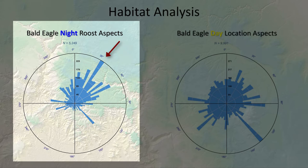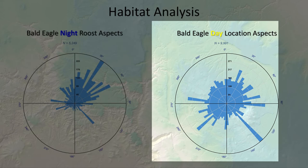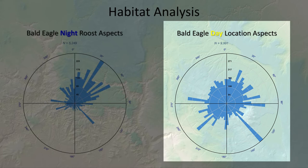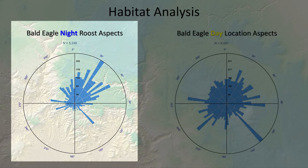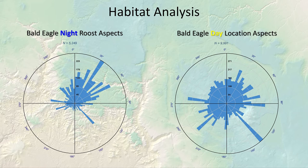Looking at a polar plot — a histogram bent around in a circle — you can see the eagles roosted most often at roughly 33 to 34 degrees aspect, meaning the landscape was generally facing northeasterly when the eagles were roosting. The plot on the right shows daytime activity — times when they could be flying, perched, or foraging. There didn't seem to be any particular trend in the direction the landscape was facing at daytime eagle locations. But at nighttime they seemed really focused on the northeast — and since they're winter residents roosting at night on northeast-facing slopes, they're basically selecting the coldest part of the landscape at the coldest time of day during the coldest time of year.